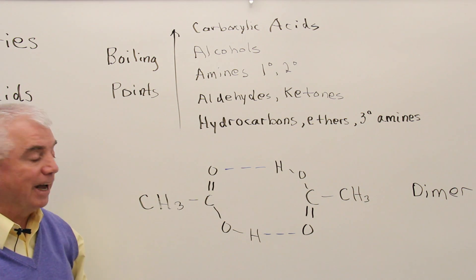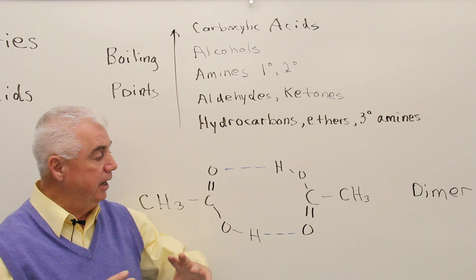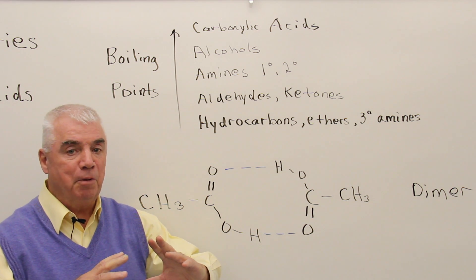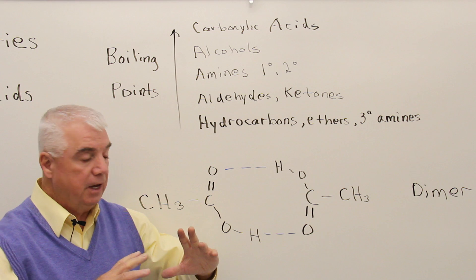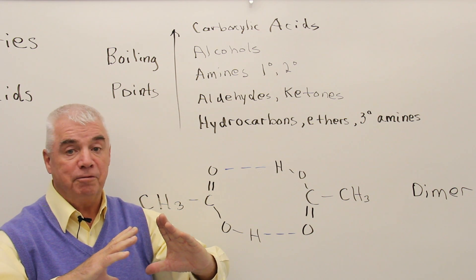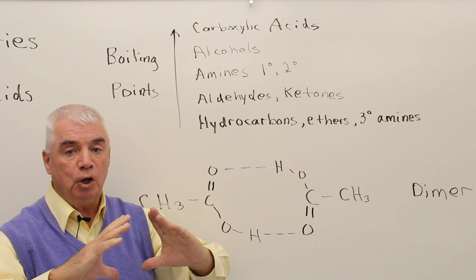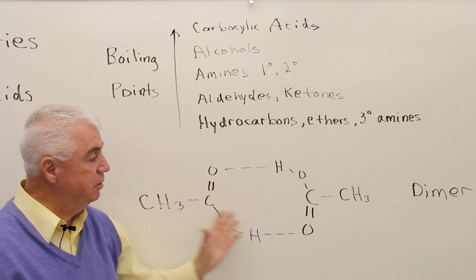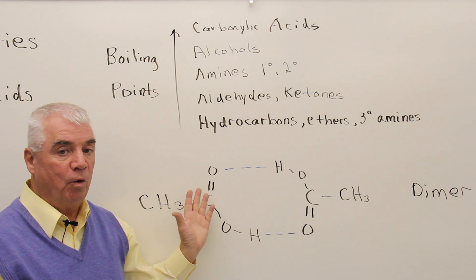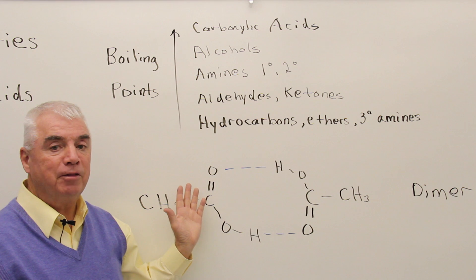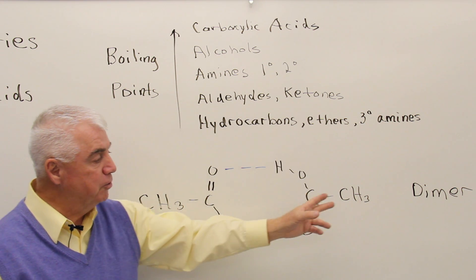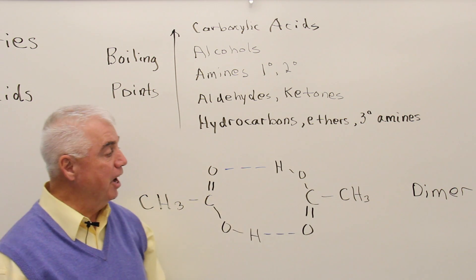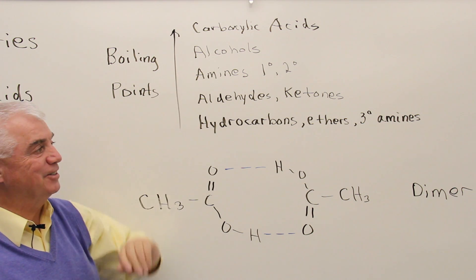The net effect of this kind of intermolecular hydrogen bonding is that it draws two molecules of carboxylic acid close together. It almost becomes one molecule, so effectively doubling the molecular weight. These are called dimers, and dimers have high boiling points.